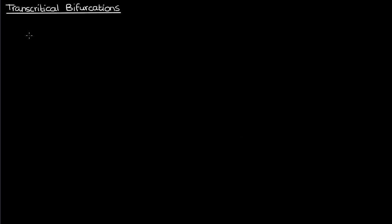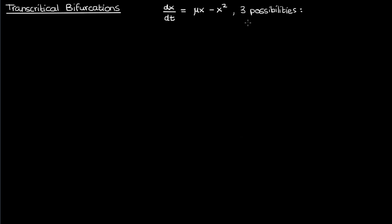Suppose we have a dynamical system of the form dx/dt equals μx minus x². In this case there are three possibilities for the parameter μ: μ can be positive, μ can be zero, and μ can be negative.